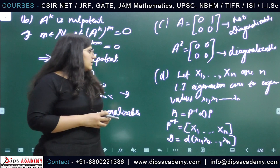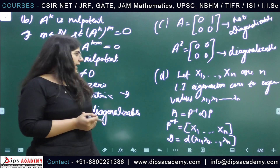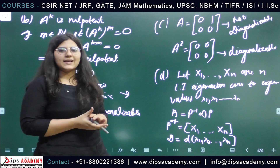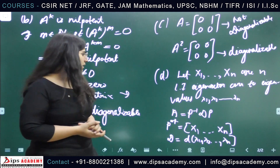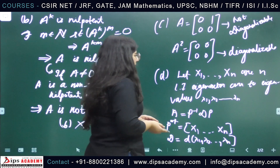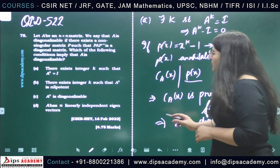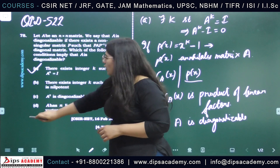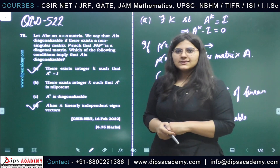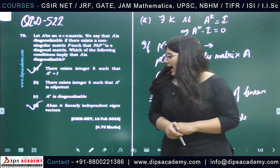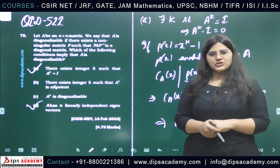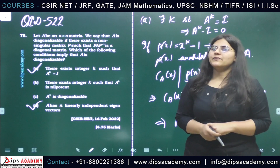By the definition of a diagonalizable matrix, option D implies that A is diagonalizable. So out of these four options, option A and option D are the correct answers. I hope you have understood the question — thank you so much for watching the video, and please wait for our next video.